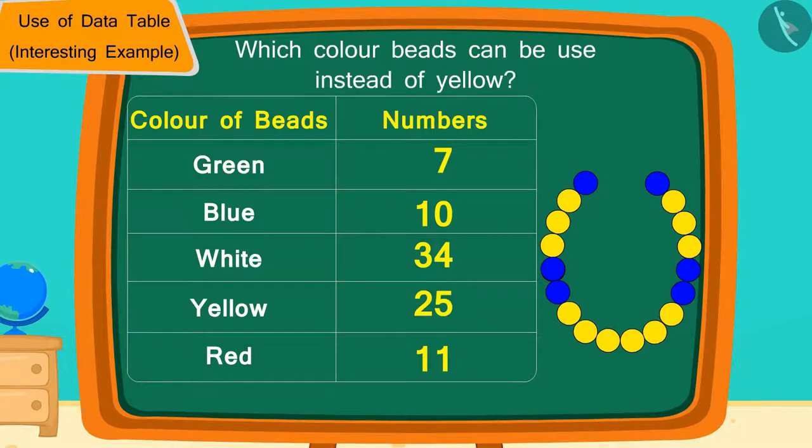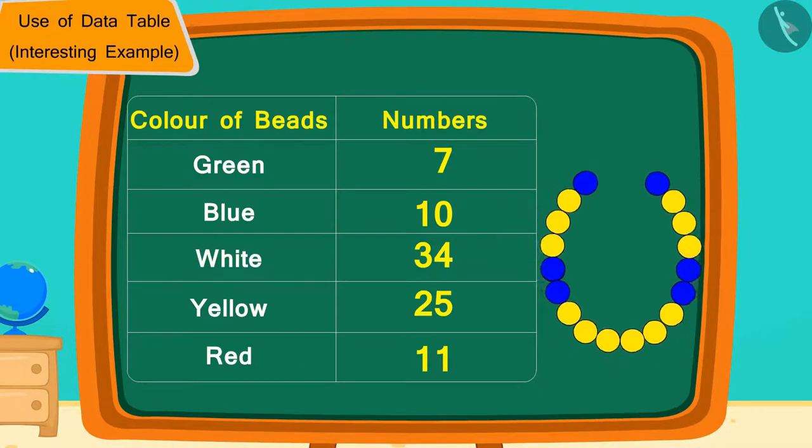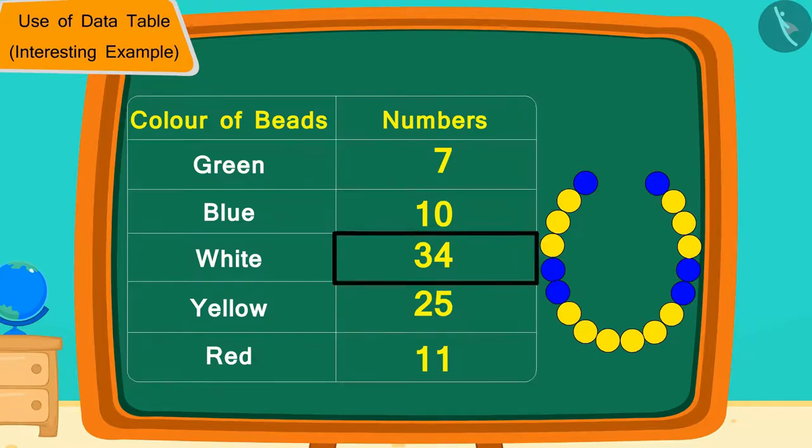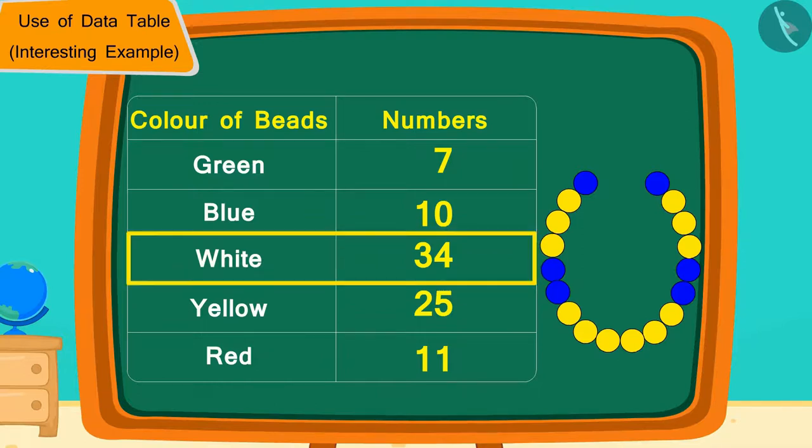That's correct. According to the design made by Golu, Chanda needs 12 yellow beads. We can see in the table that only 34 is more than 12, which is the number of white colored beads. Therefore, to make the necklace, Chanda can also use white colored beads instead of yellow colored beads.